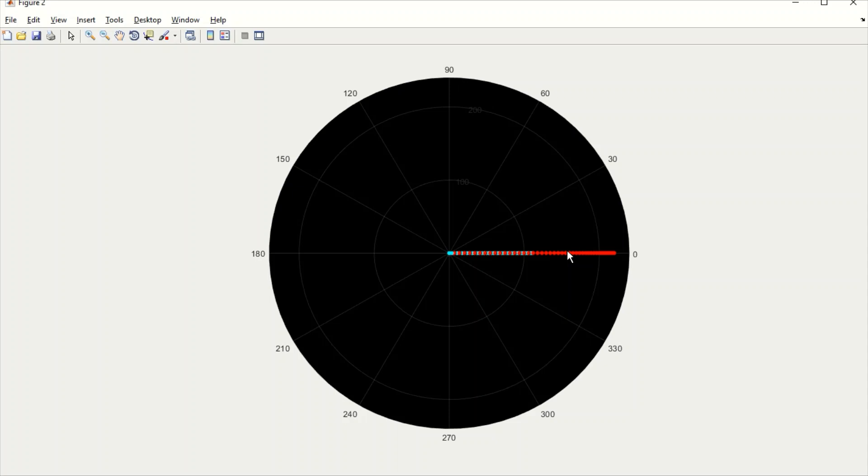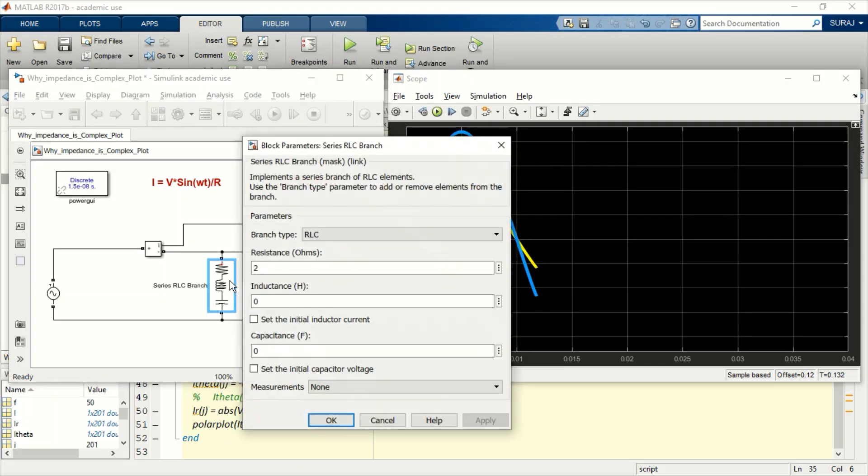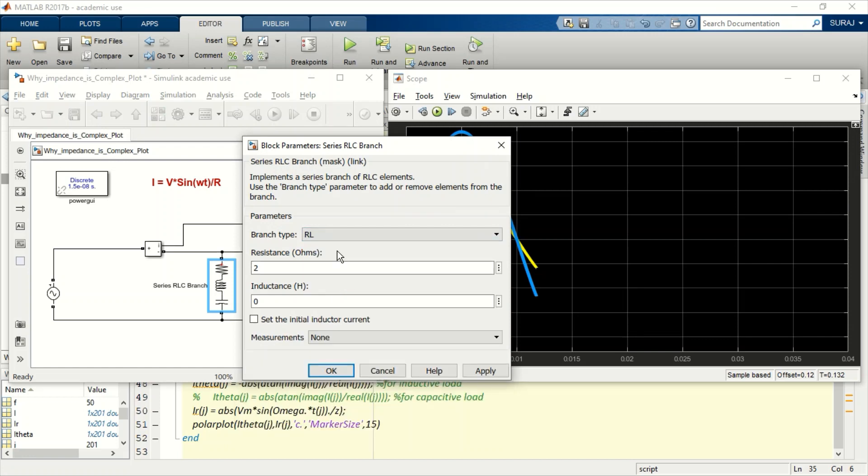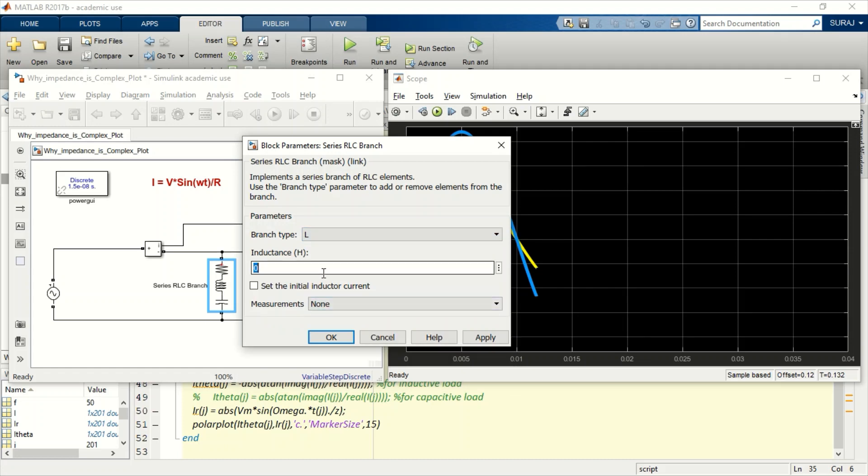Now let us try to plot for an inductance circuit only, so it will be more clear. This is the value that I'm taking.